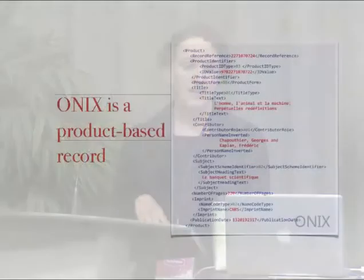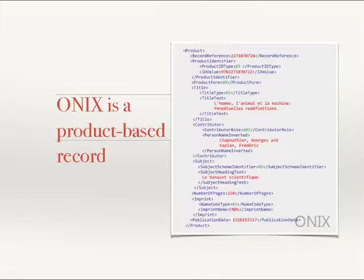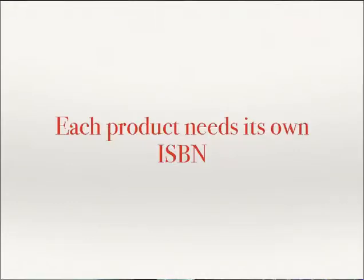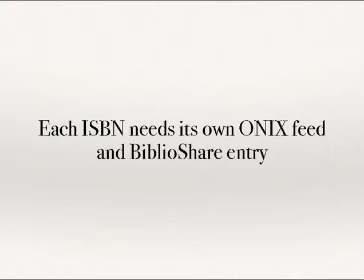ONIX is an XML-based standard for sharing bibliographic data. It's used for both print and digital books. ONIX is a product-based record, which means that each version of a book — the print book, the PDF, the EPUB — is considered a different product. Each product needs its own ISBN, and each of those ISBNs in turn needs its own ONIX feed and BiblioShare entry.